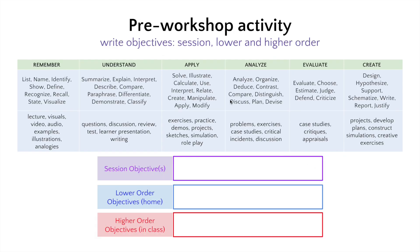What I'd recommend is that you take one of the objectives from something you teach yourself and write it in. Then try to break it up into a lower-order and a higher-order objective. The lower-order ones — remember, those are the at-home things: remember and understand. The higher-order objectives are the things you'll do in class: apply, analyze, evaluate, and create. Later, we're going to design activities that support those objectives.